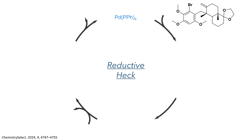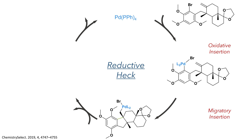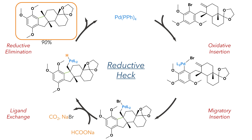With this alkene installed, the stage was set for a reductive Heck reaction. Tetrakis(triphenylphosphine)palladium was used as the catalyst for the reaction, which first undergoes an oxidative addition into the carbon-bromine bond. This then undergoes a migratory insertion into the alkene, forming a new carbon-carbon bond. The reaction of this intermediate with sodium formate generates a palladium hydride species together with the elimination of sodium bromide and carbon dioxide. This palladium hydride then undergoes a reductive elimination to form the target compound in a 90% yield.